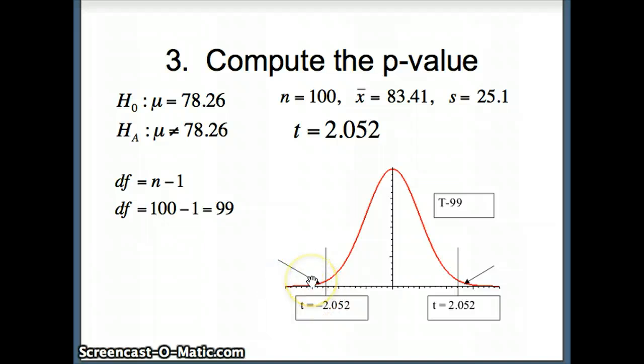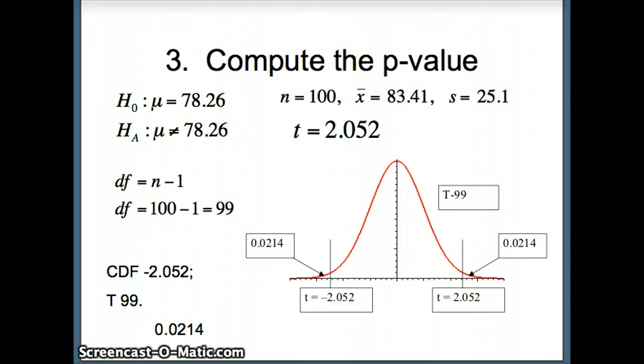We go to the right of 2.052 and also to the left of negative 2.052. We ask Minitab to do cdf negative 2.052, which gives 0.0214. So we have 0.0214 in this tail and 0.0214 in that tail. Putting those together gives the p-value: 2 times 0.0214 equals 0.0428.